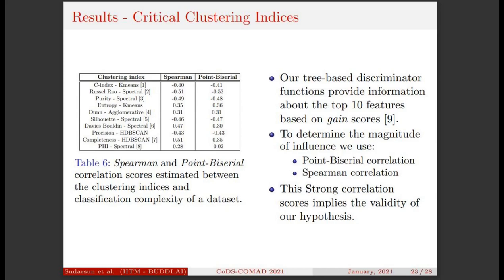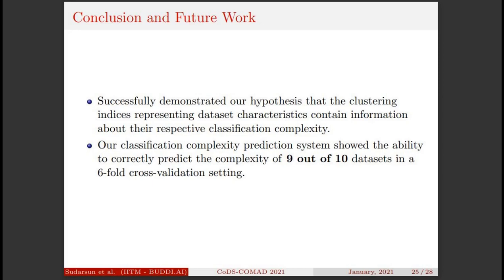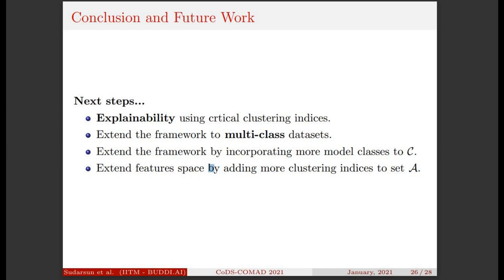Now, to conclude, with results from our experiments, we successfully demonstrated our hypothesis that the clustering indices indeed have a strong relationship with the dataset's classification complexity. Also, our classification complexity prediction system was effective 9 out of 10 times on average. For future work, we can try to give explainability of the predicted complexity using the critical clustering indices. Also, we can extend our framework for multi-class datasets or by adding more clustering and classification algorithms. The code for our system is available in GitHub. We encourage you to try our system before you start solving your next classification problem. Once again, thank you all for your time and patience.